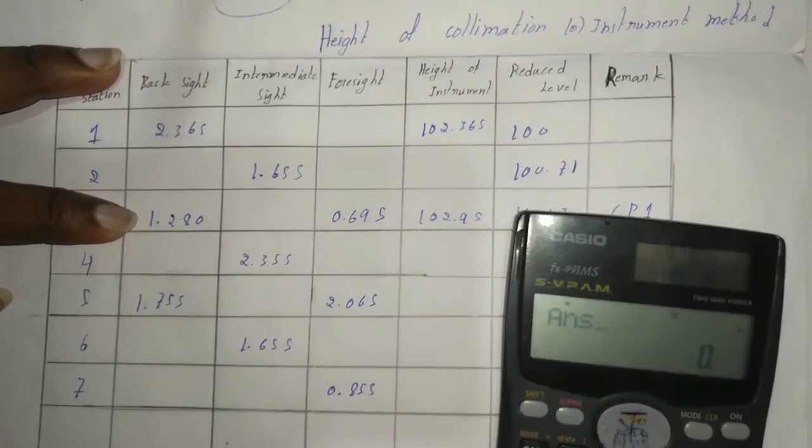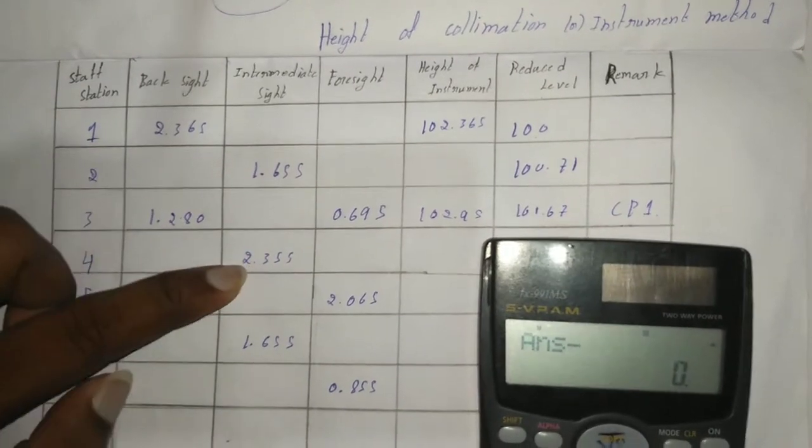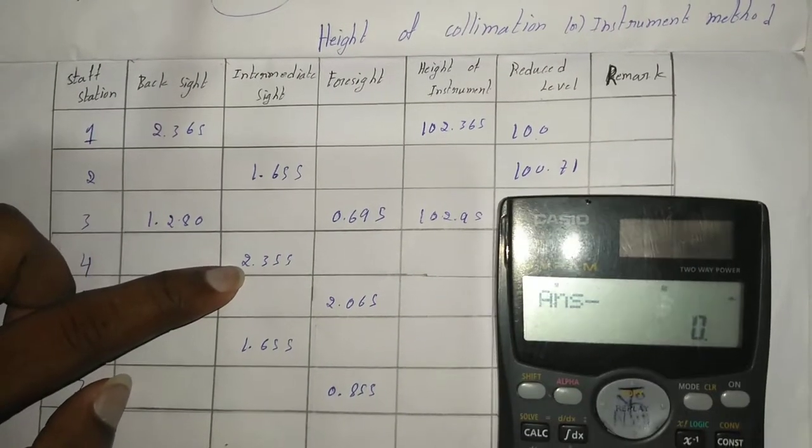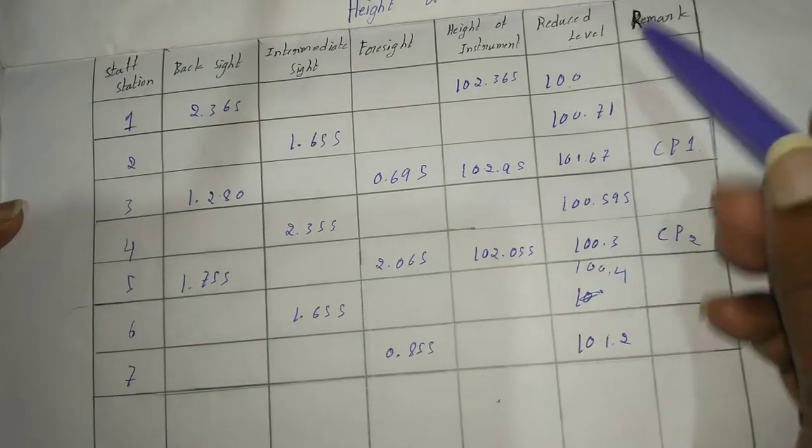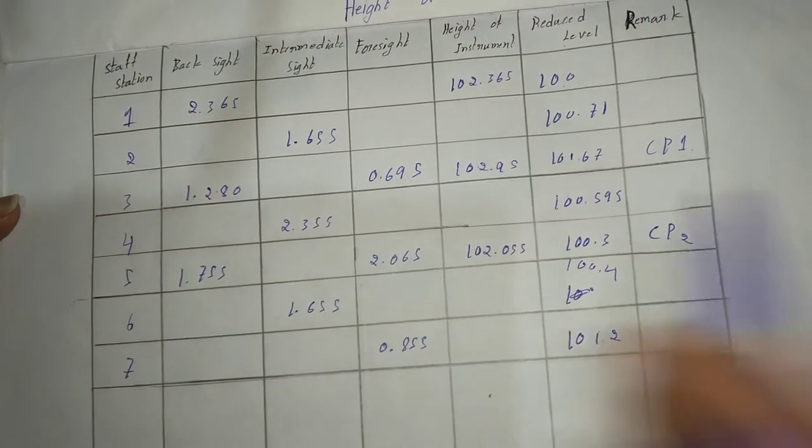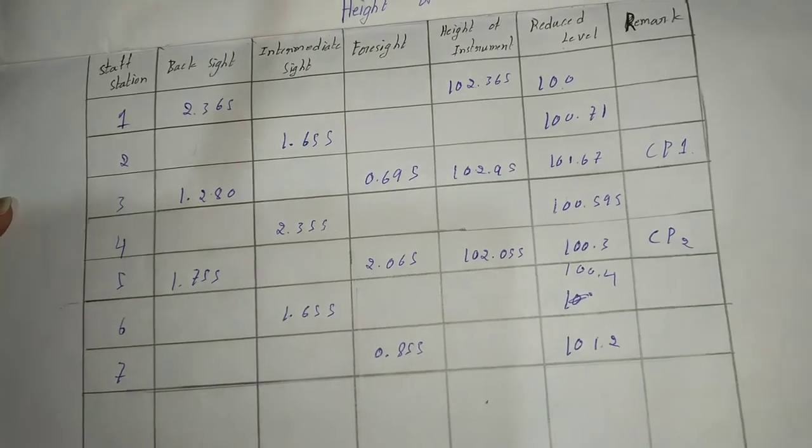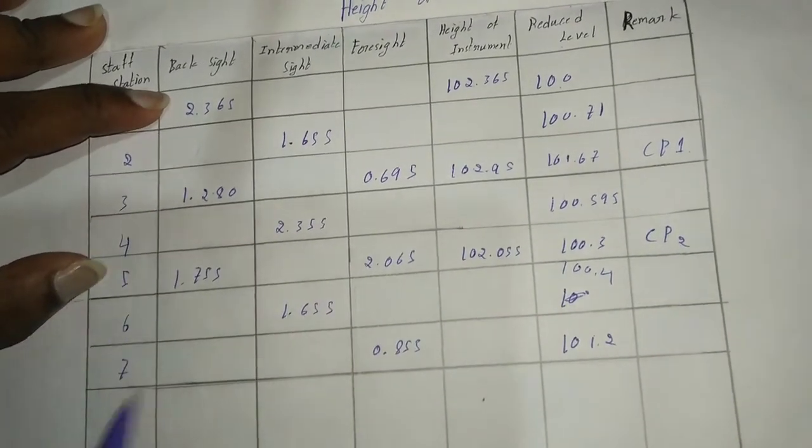Again divide with backsight, intermediate side. After finding all RLs, you have to check these values are right or not wrong, then add the all backsight for reflection.